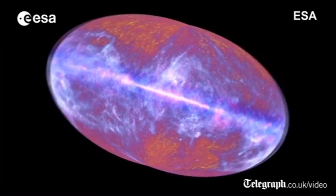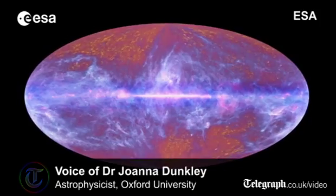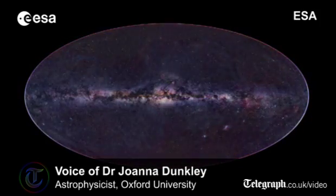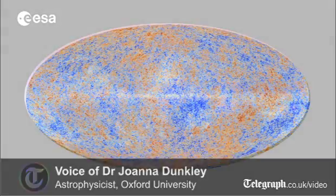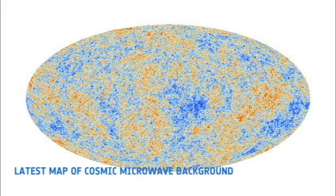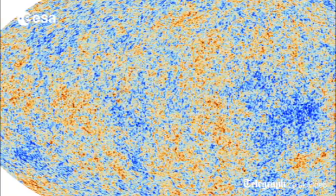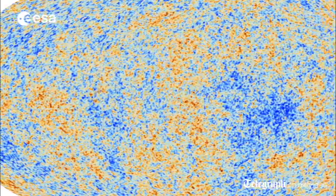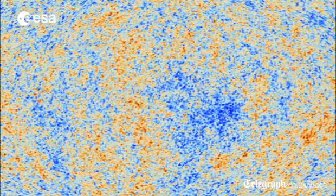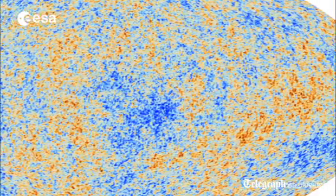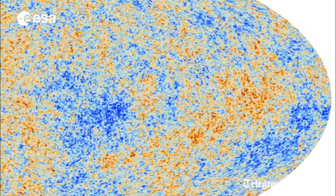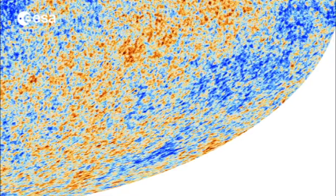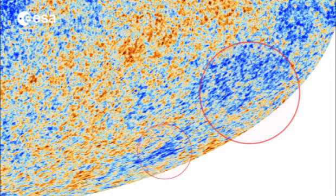It is a map of part of the universe when it was 400,000 years old or a bit younger. You see an oval, but that's like a map unwrapped from around you on the sky — like a sphere unwrapped onto a flat piece of paper. The colour measures the temperature of the light. Where it's red, it's ever so slightly hotter than average, and where it's blue, it's ever so slightly colder than average.